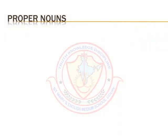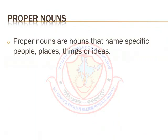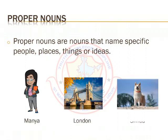Proper nouns are nouns that name specific people, places, things or ideas. Examples: Mania, London, Simba. Do you see how these are different? Mania is naming a specific person. London is naming a specific city. And Simba is naming a specific dog.